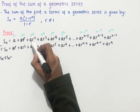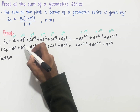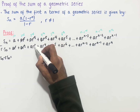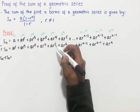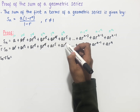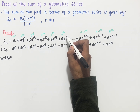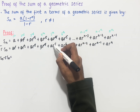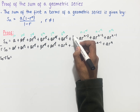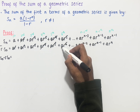We also have ar squared minus ar squared, so that cancels. Likewise ar cubed cancels with ar cubed, ar to the power of 4 cancels with ar to the power of 4, and this repeats — ar to the power of 5 cancels, the next term would be ar to the power of 6, which would cancel with that term.